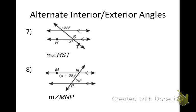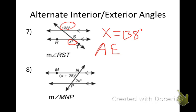Let's look at number seven. I want to find the measure of angle RST. What is the relationship between the angles? I agree X is 138, but why? What type of angles are these? Those are alternate exterior angles — AEA.